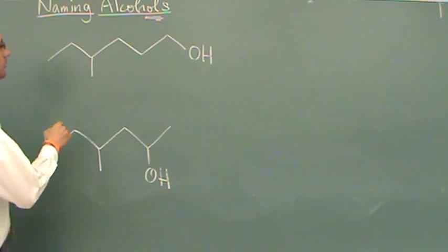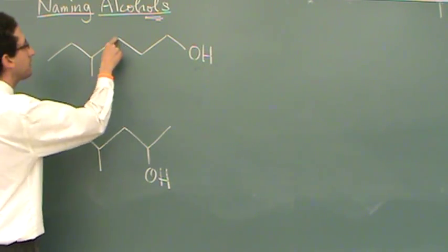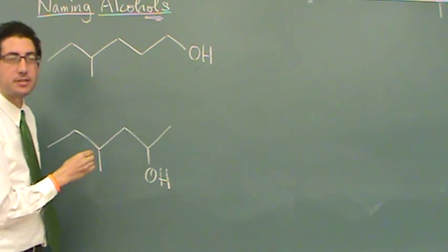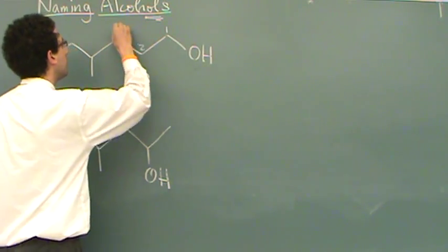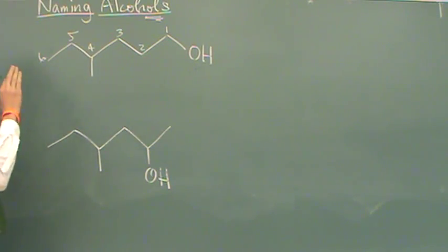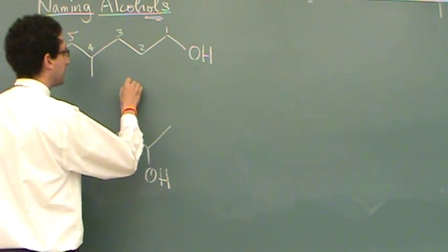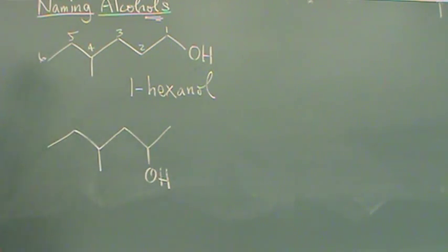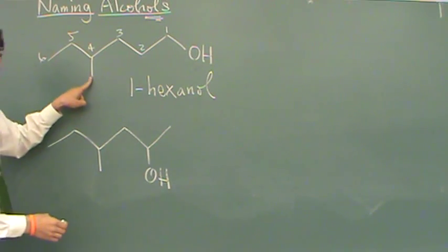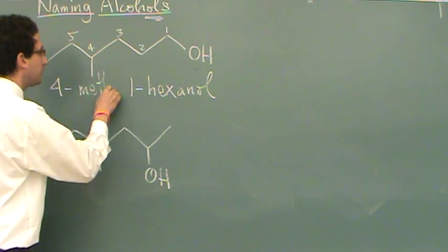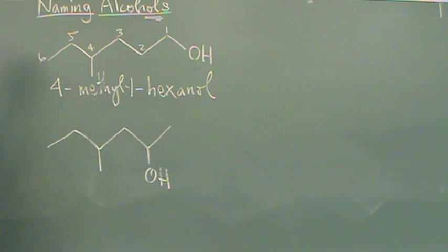So let's try this one. The main chain is one, two, three, four, five, six. But we want to put the one closest to the side of the alcohol. So one, two, three, four, five, and six. So this is going to be a hexanol. And then again with the OL. And it will be specifically a one hexanol. And then you see there's a methyl group right here on the fourth position. So we'll call this a four methyl one hexanol.